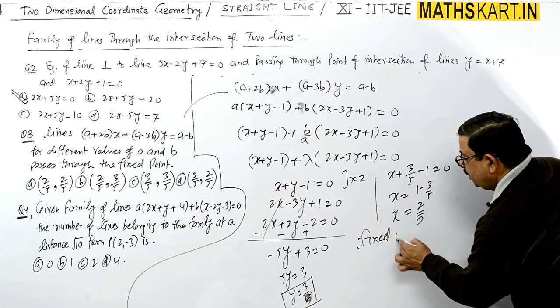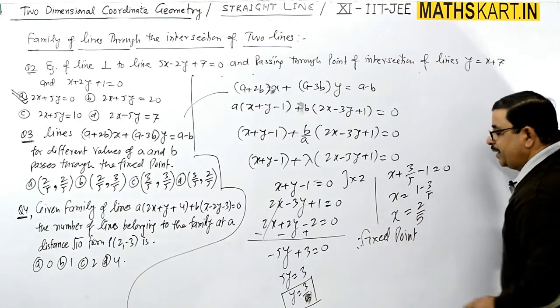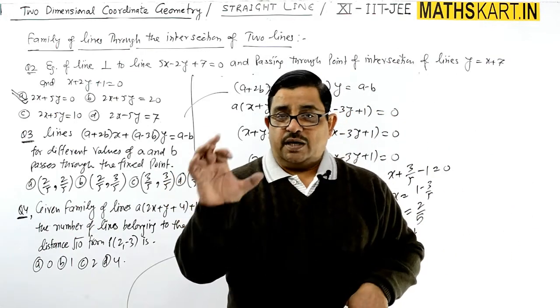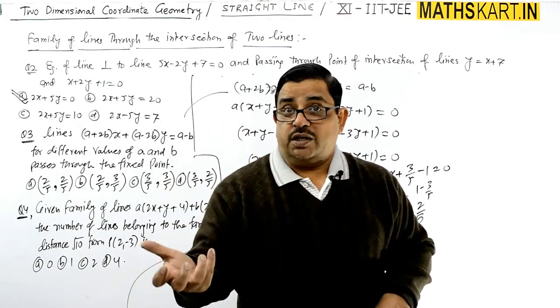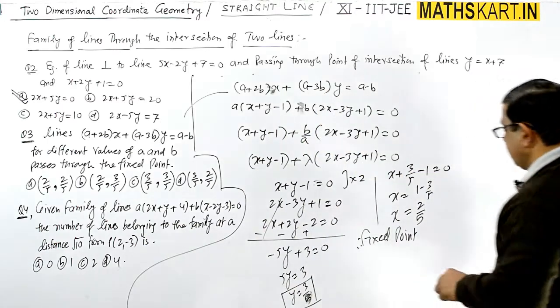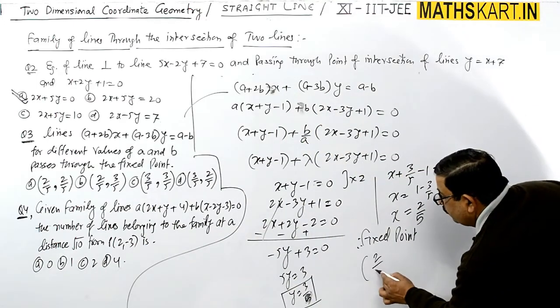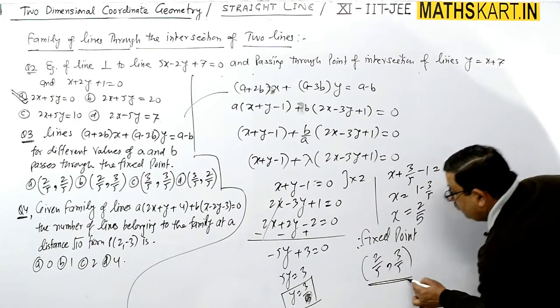This fixed point we're discussing - the fixed point is actually the point of intersection of those two lines. The fixed point is (2/5, 3/5). This is the fixed point.